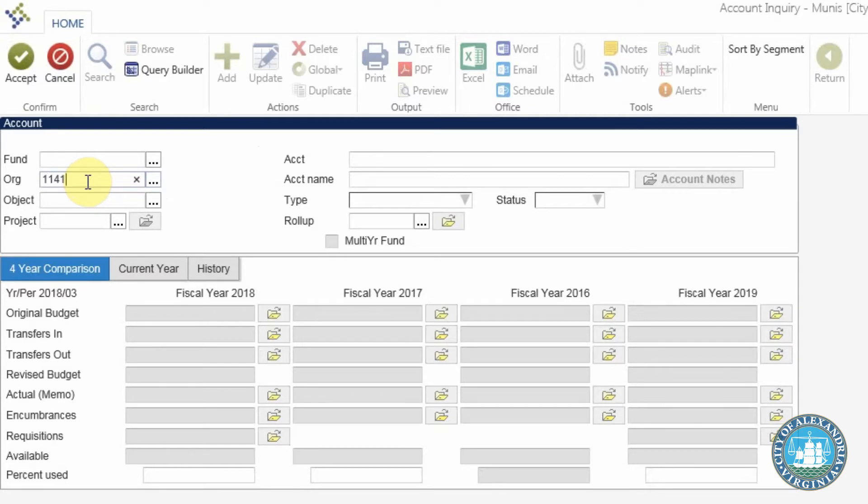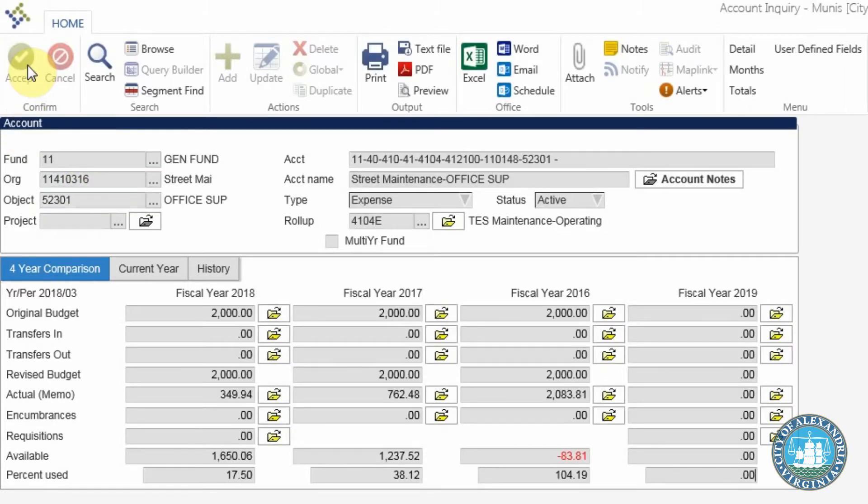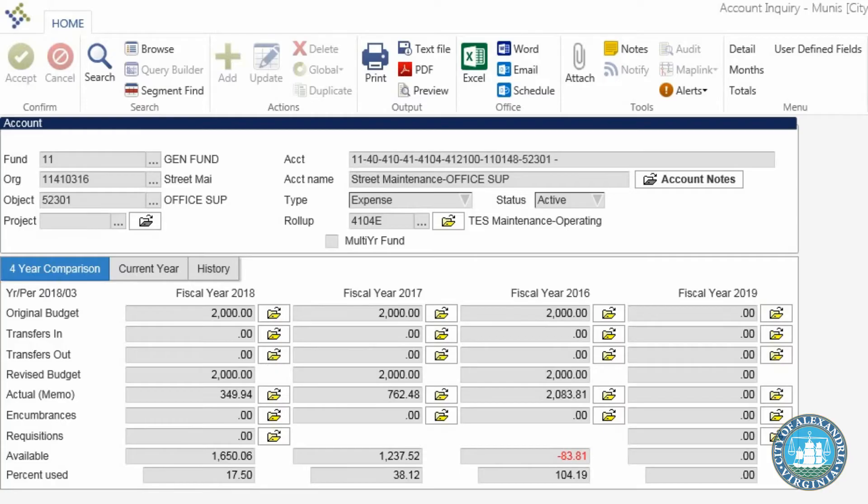So instead, we can just type in 1141-0316-52301, and we're there. And look, so is the long string. Every short string has an associated long string, and vice versa. Both point to the same amount of money. They're two sides of the same coin. Or maybe they're two sides of the same reversible bucket hat. Either way.